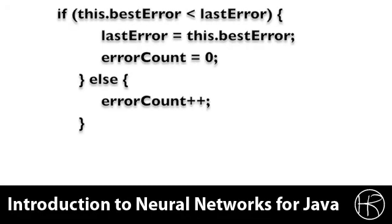If the best error is less than the last error, then we are going to set the last error equal to the best error, and we are going to reset the error count because we have improved the error rate of the neural network. Otherwise, we are going to execute the else clause of the if statement, which is going to cause the error count to increase by 1.